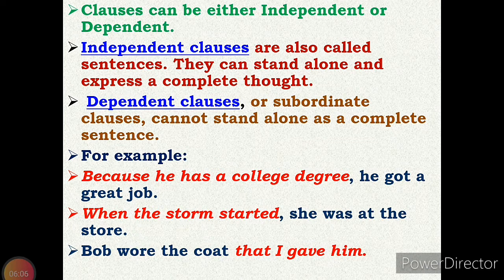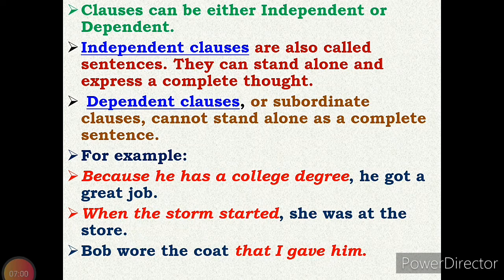Clauses can be either independent or dependent. Independent clauses are also called sentences, which give a complete sense — they can stand alone and express a complete thought. A dependent clause, or subordinate clause, cannot stand alone as a complete sentence. It must depend on some other group of words to get complete sense. An independent clause can also be called a principal clause.